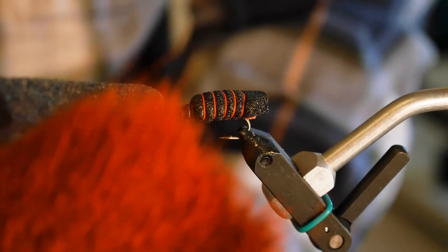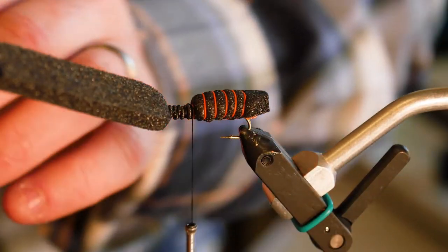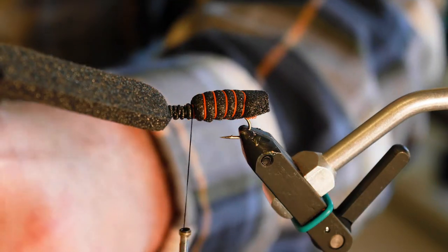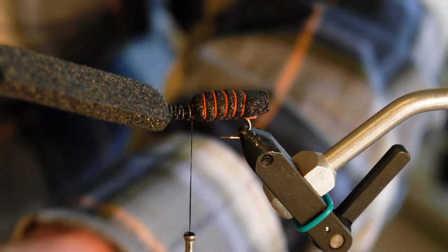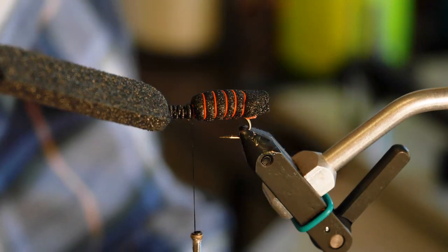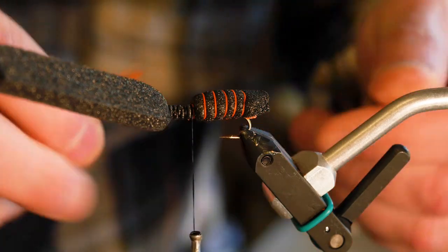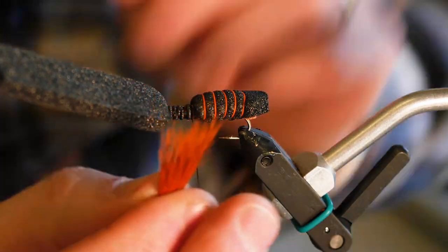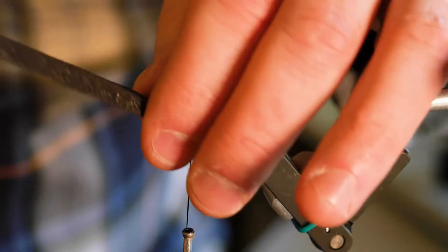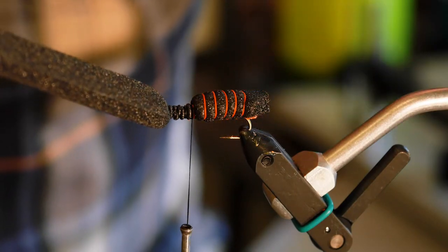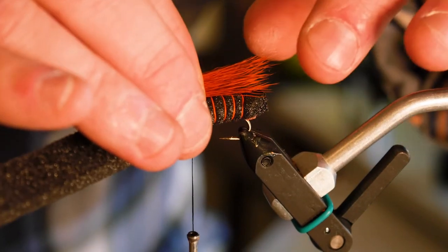Next material is deer body hair. And this is orange deer body hair. You can put flash in there. I don't. I just use the deer body hair. I used to tie them with flash and found that it didn't help, didn't hurt, but it didn't help. And they ate it just fine without it. You want to clean all the fuzz out of the deer hair. Deer body hair comes off the hide pretty even. You can put this in a hair stacker if you want. I don't waste the time. I'm fine with it like that.